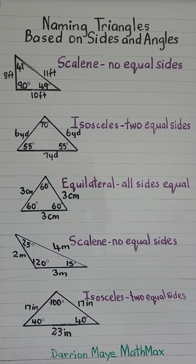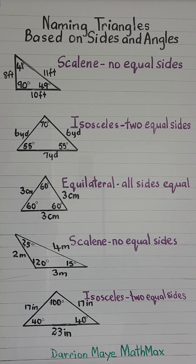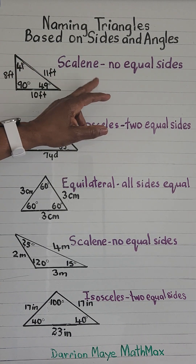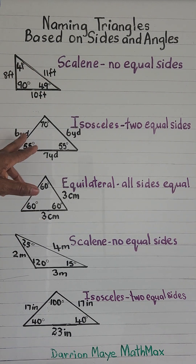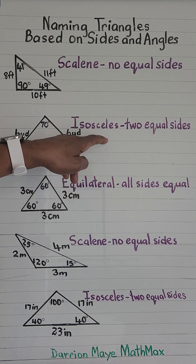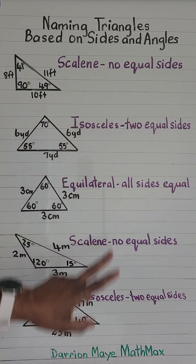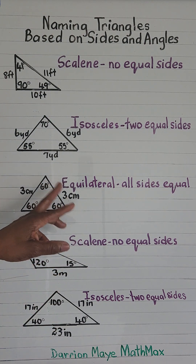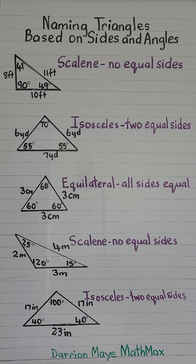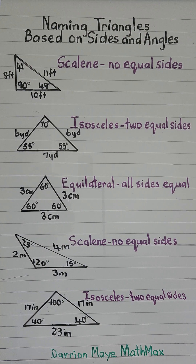So a triangle with no equal sides is scalene, two equal sides is isosceles, and all three sides equal is equilateral. Now let's name our triangles based on angles.